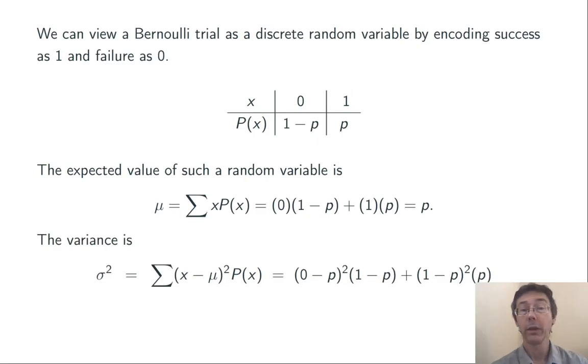Similarly, we can compute the variance. We take the sum of x minus the expected value squared times P(x) over all the possible values of x. Simplifying the result, we get a variance of p times 1 minus p. This means that the standard deviation for a Bernoulli trial is going to be the square root of p times 1 minus p.